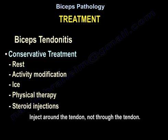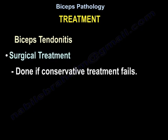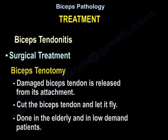Treatment of biceps tendonitis begins with conservative management: rest, modification of activity, ice, physiotherapy, or steroid injection around the tendon — not through the tendon. Surgery is done if conservative treatment fails, and can include biceps tenotomy, where the damaged biceps tendon is released from its attachment and the tendon is cut and allowed to retract. This is done in elderly and low-demand patients.